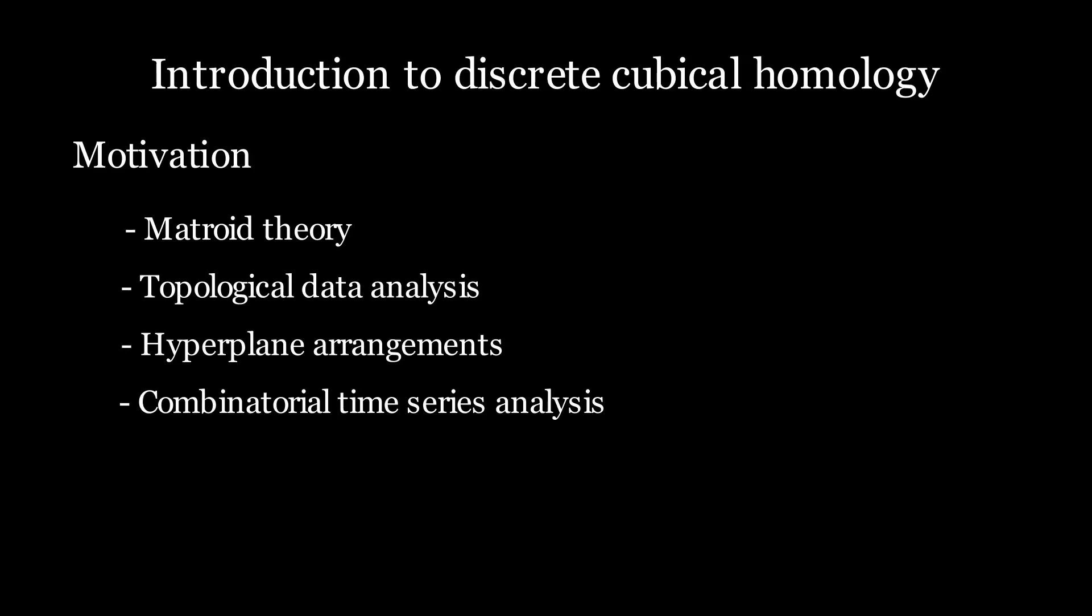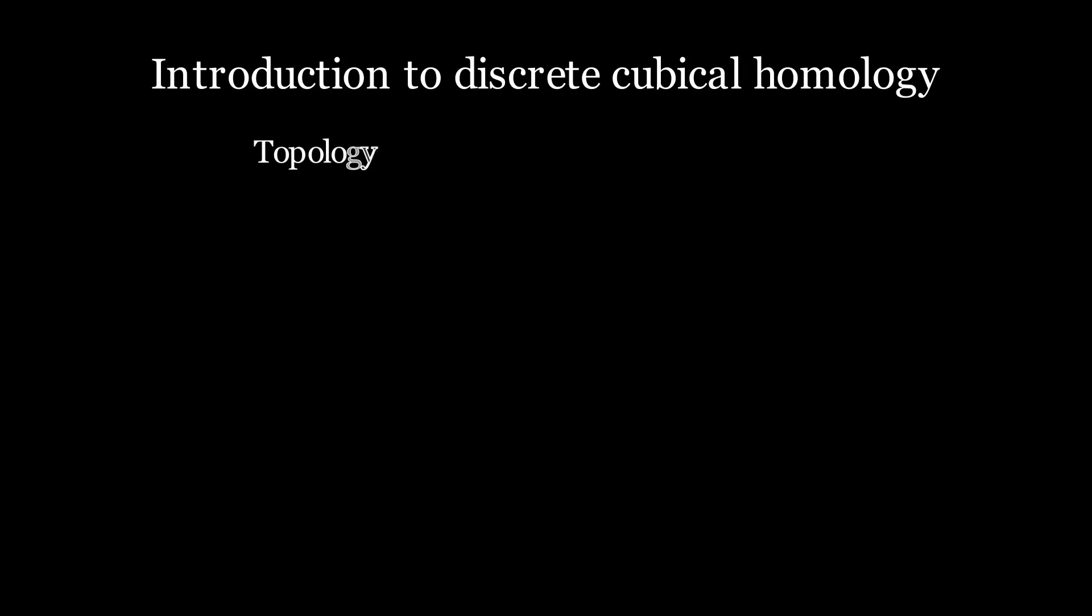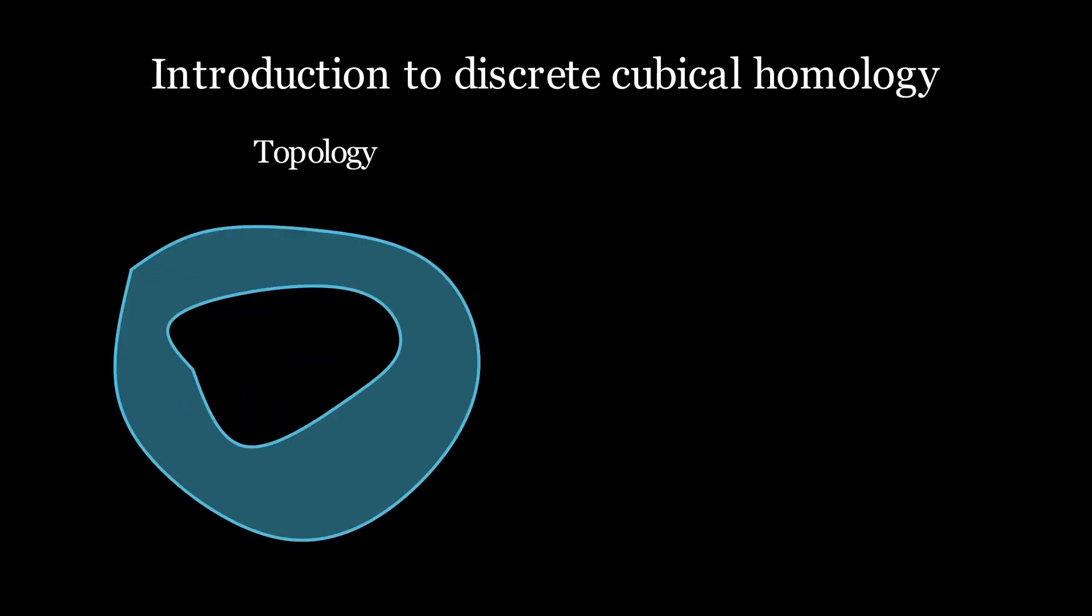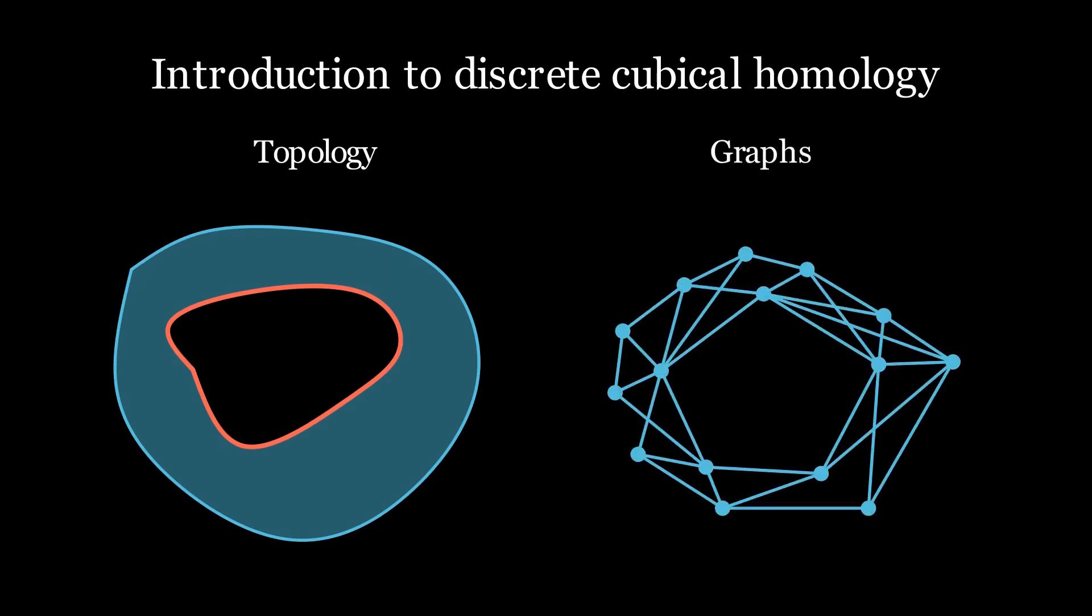In a very broad sense, in topology, homology is used to detect different dimensional holes in our topological spaces. And what we want to do is mimic that for graphs. So we want discrete cubical homology to be a way to detect different dimensional holes, whatever that means, in our graphs.